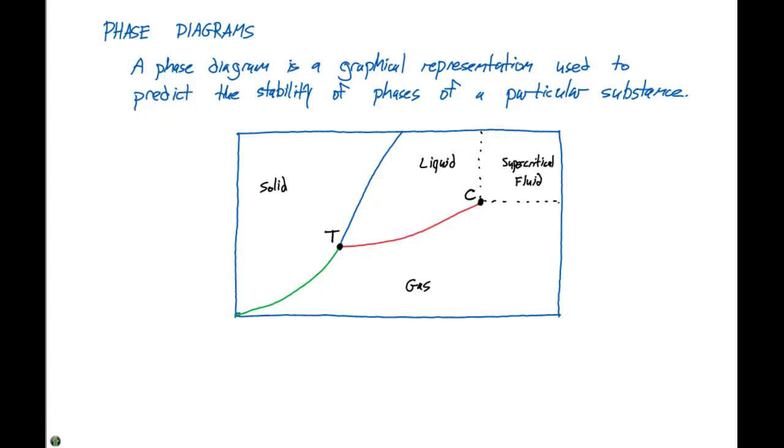The last section in this chapter deals with phase diagrams. A phase diagram is a graphical representation used to predict the stability of phases of a particular substance.